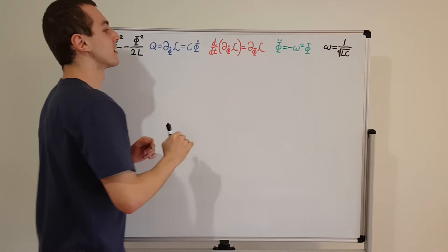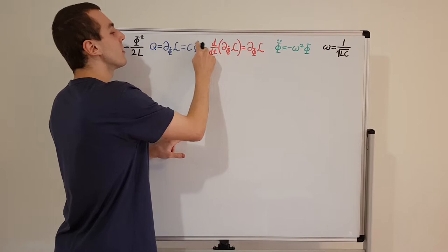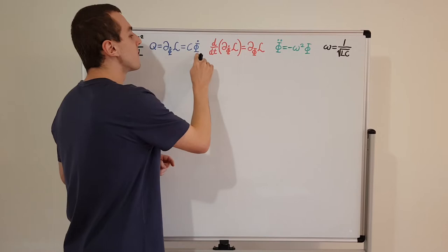If you substitute Q inside the brackets, you're just taking the time derivative of that expression. That's going to introduce another dot above phi, because phi dot denotes a time derivative. So we're going to have C phi double dot.